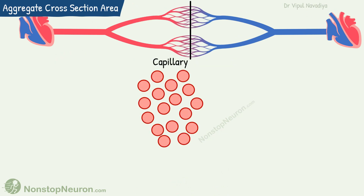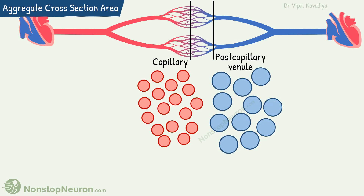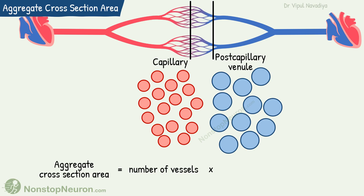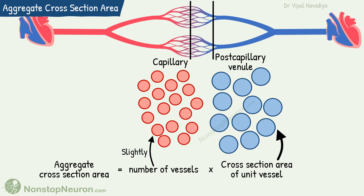It seems that maximum aggregate cross-section area must be at the capillaries. But in fact, the maximum aggregate area occurs at the post-capillary venules. The aggregate cross-section area is essentially the number of vessels at that level multiplied by the cross-section area of a unit vessel. Capillaries have the advantage of being more in number; however, this margin is small. On the other hand, the cross-section area of a unit post-capillary venule is significantly greater, which more than compensates for their lesser number. So aggregate cross-section area is maximum at the level of post-capillary venules.